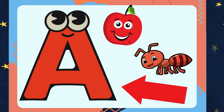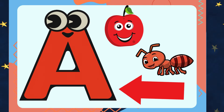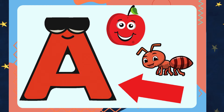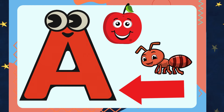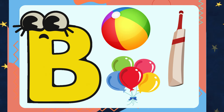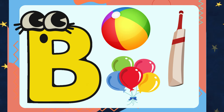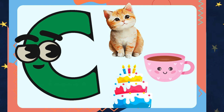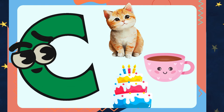A is for Apple and Arrow. B is for Ball, Bad, Balloon.